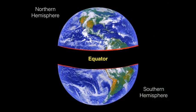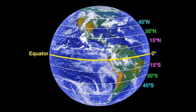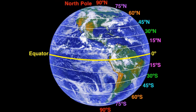If we move either up or down from the equator, our distance and angle increases. Eventually, we will reach either the north or south pole, which is located exactly 90 degrees from the equator.